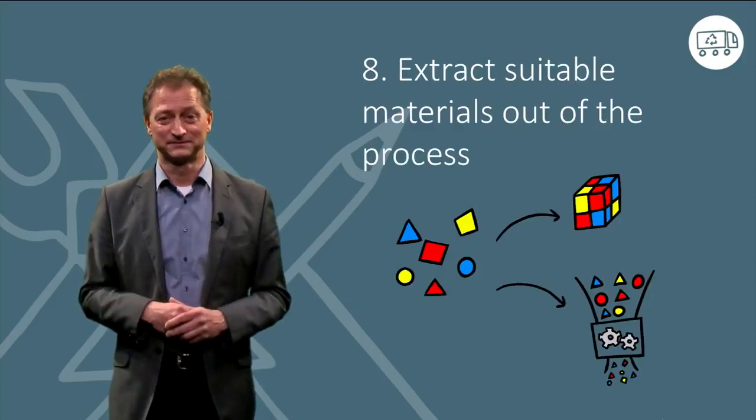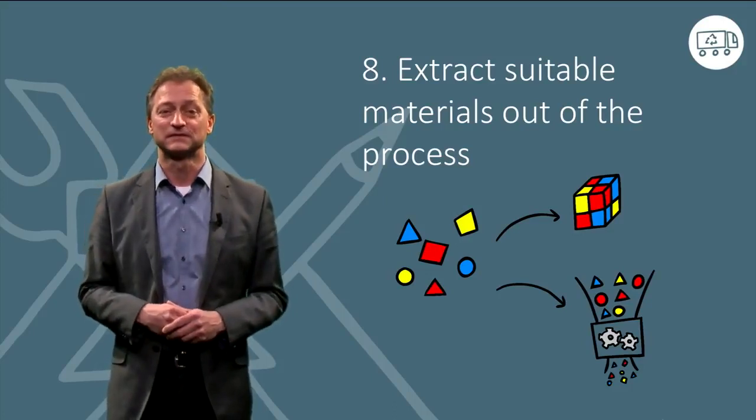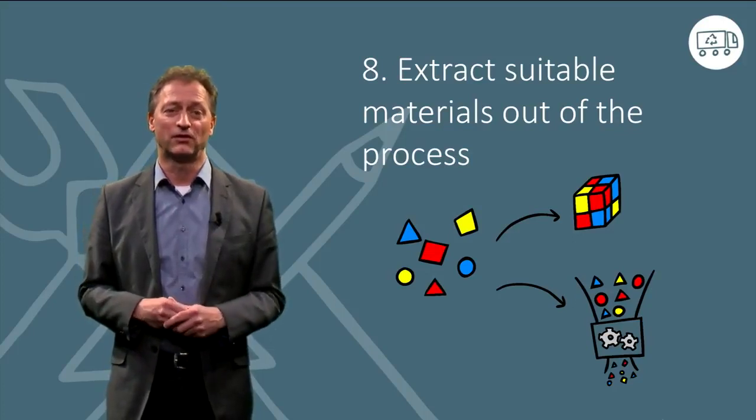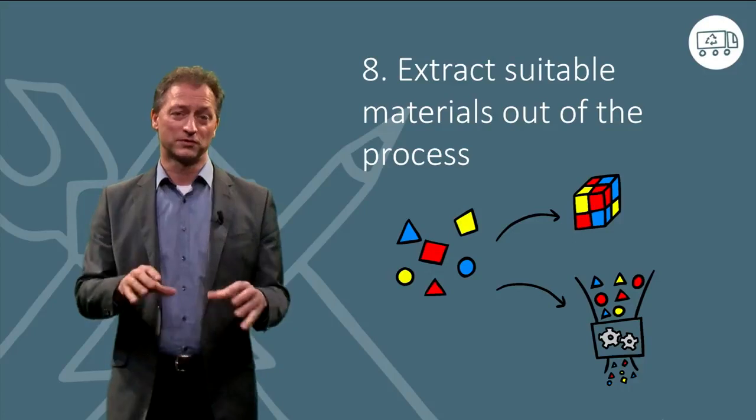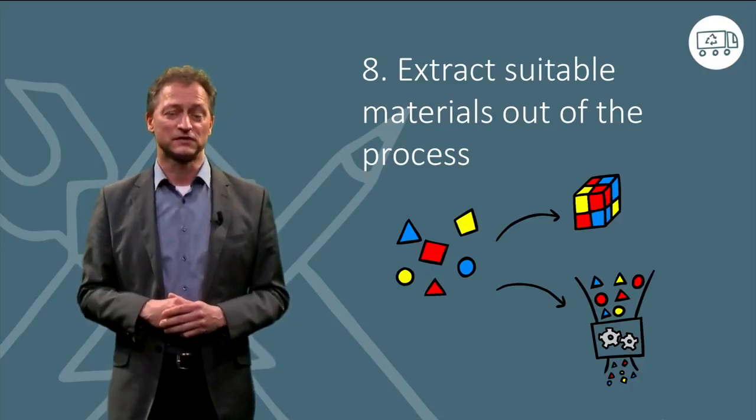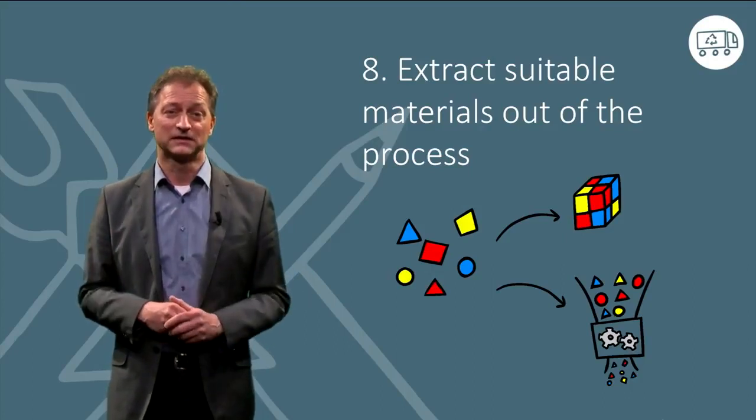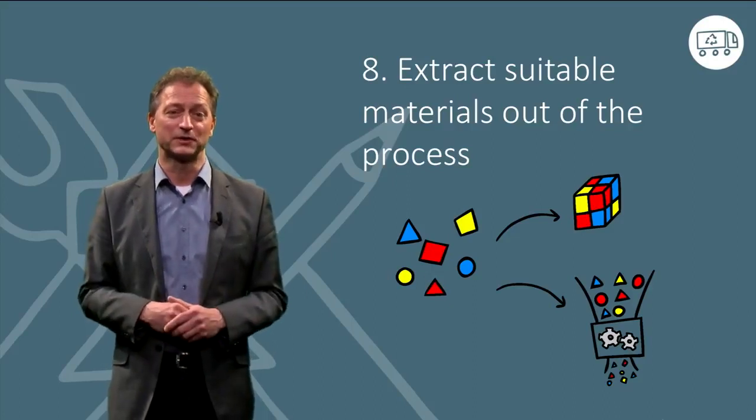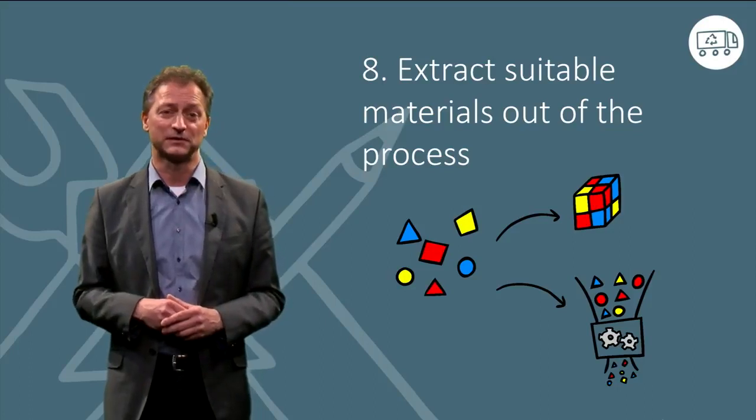The eighth step. Extract suitable materials out of the process. In the stage of the process, we could separate materials which fulfill all requirements of a certain manufacturing process. These materials can therefore be fed into a new process. At this point in the process, a lot of effort and energy has already gone into extracting these materials. Depending on which material we are extracting, this process might be economically justifiable or not.